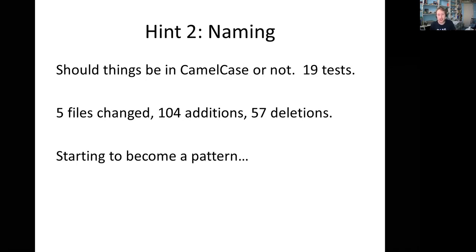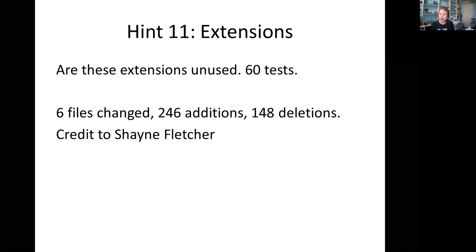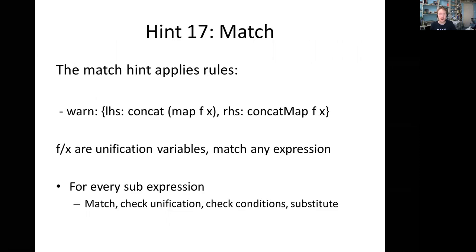We then converted the naming hint, which followed the same pattern and we just iterated. One of the bigger ones — hint number 11 of 17 — was extensions, at 250 additions and 150 deletions, credit to Shane Fletcher. The final and largest one was hint number 17: the match hint. This is the hint where the concatMap rule isn't built in but lives in a YAML file saying: if the left-hand side looks like `concat` of `map`, the replacement should be `concatMap`. Single-letter variables like f and x act as unification variables — for every sub-expression we match, check unification, check any side conditions, and substitute. That one was done over several PRs, probably around 500 lines.